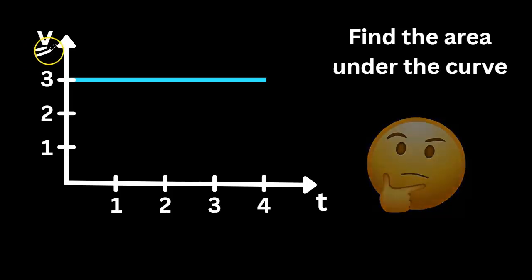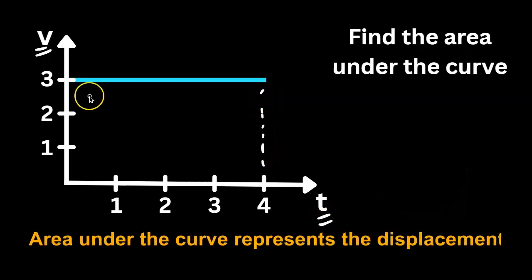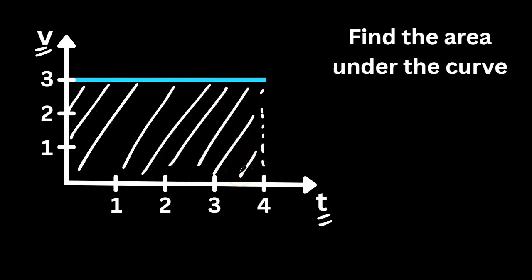So on a velocity versus time graph, the area under the curve represents the displacement. Displacement is the change in position. Now, you'll notice that this area right here is a rectangle.